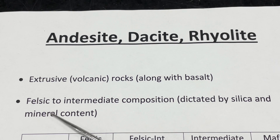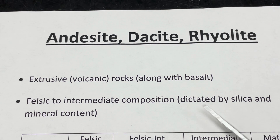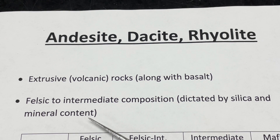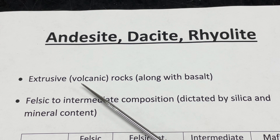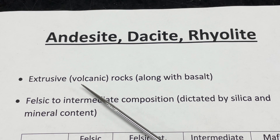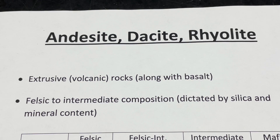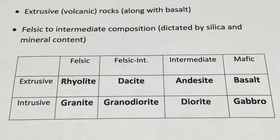These rocks are at the felsic to intermediate end of the spectrum, so they're going to have more silica and some different minerals — or at least different percentages of minerals — than what we've seen with basalt. These are extrusive or volcanic rocks that erupt from volcanoes. Depending on where you live, especially out west, there's a good chance plenty of these rocks are in your area.